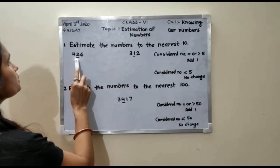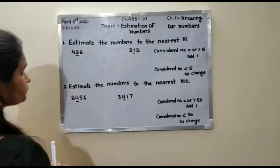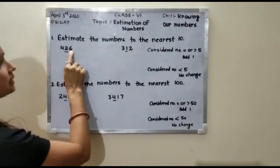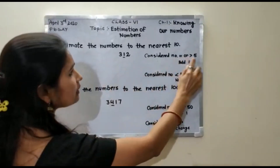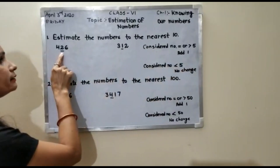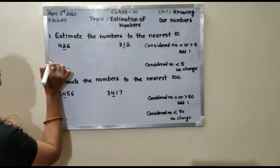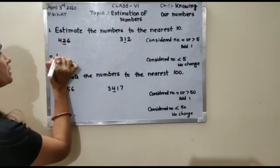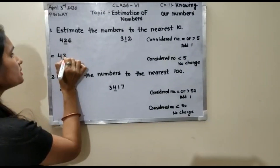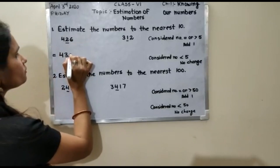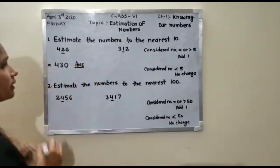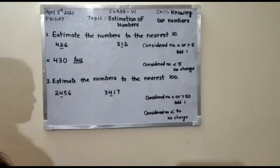The tens place is 2 and your considered number is 6. Since 6 is greater than 5, you will add 1 to the underlined digit. The first number will remain the same, and 2 plus 1 is 3. The last digit will become 0, so 430 is the correct answer.